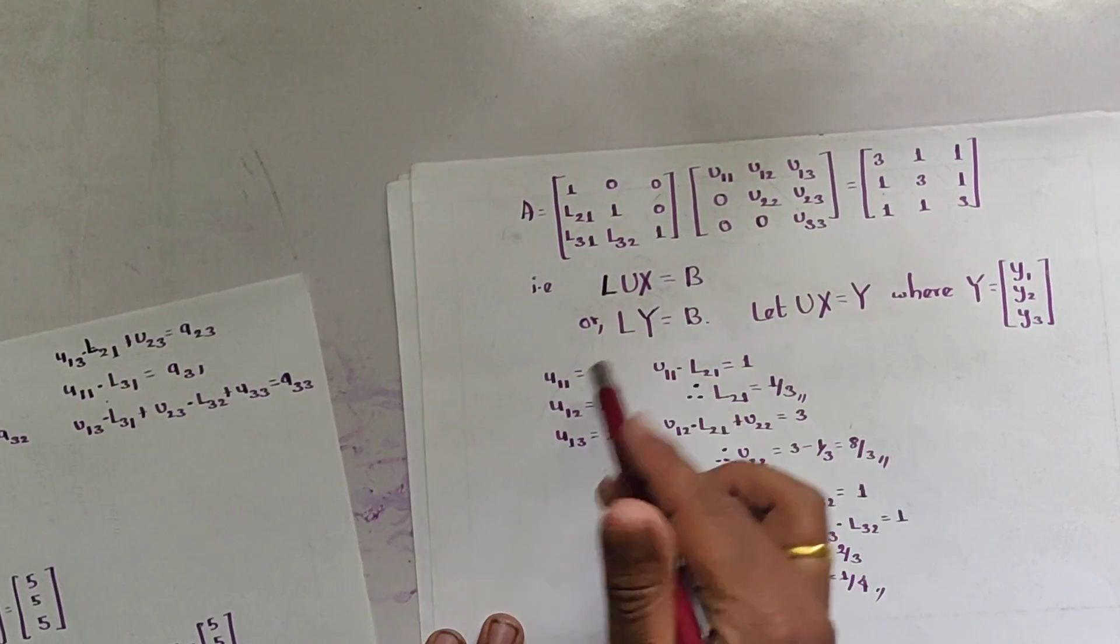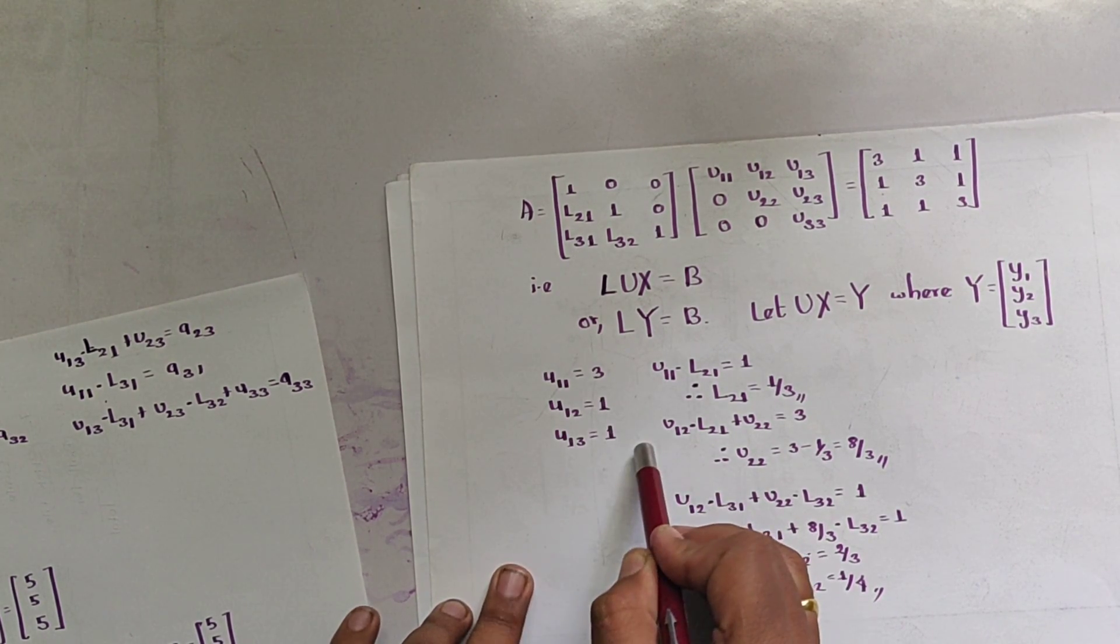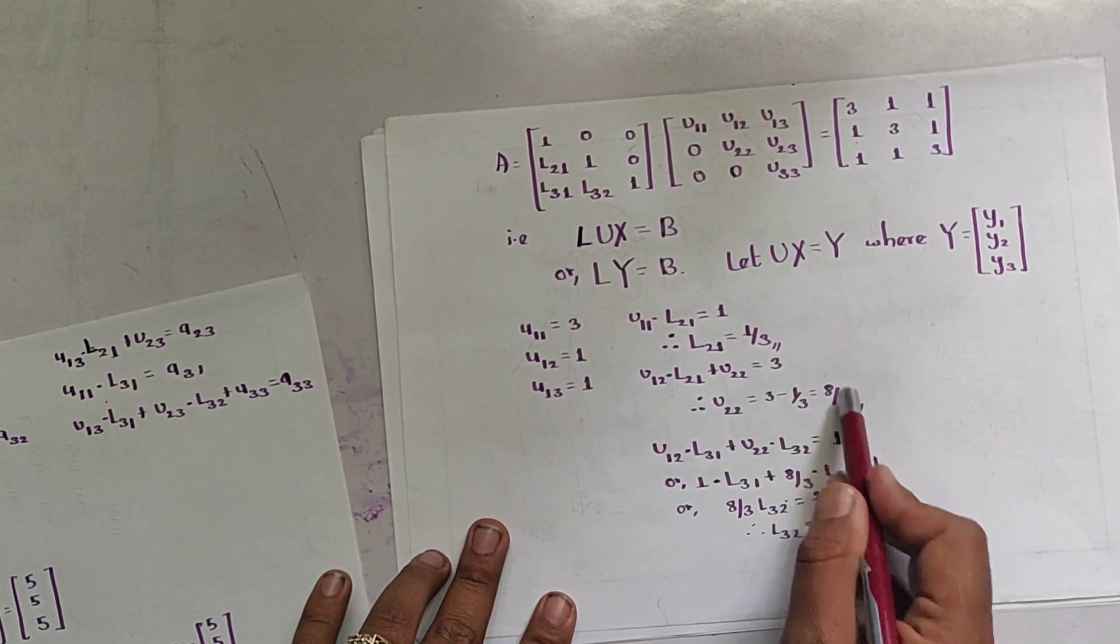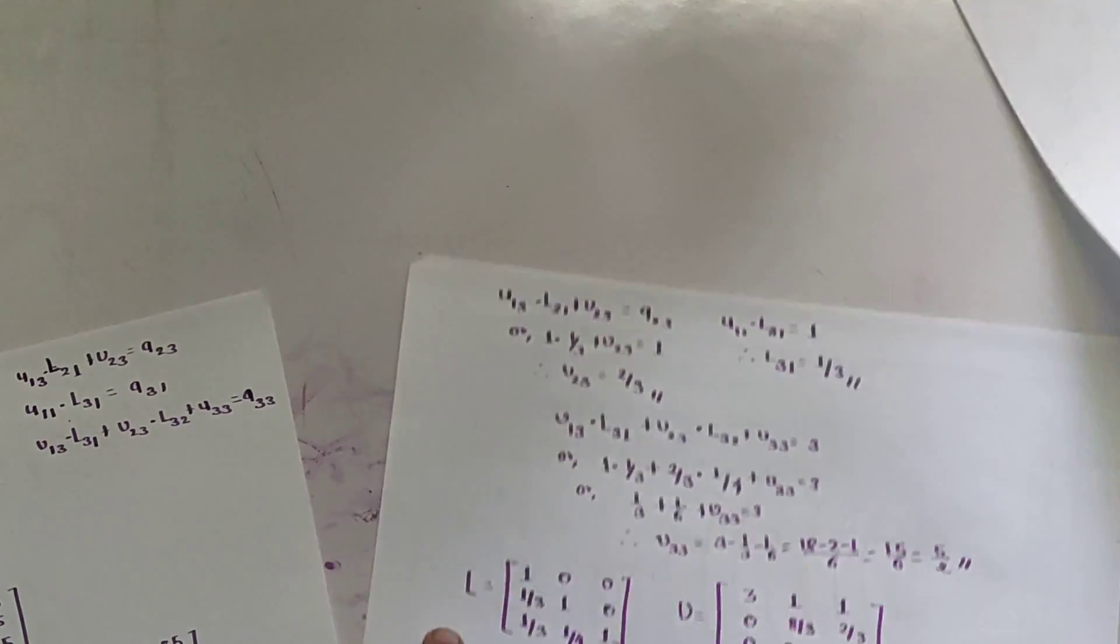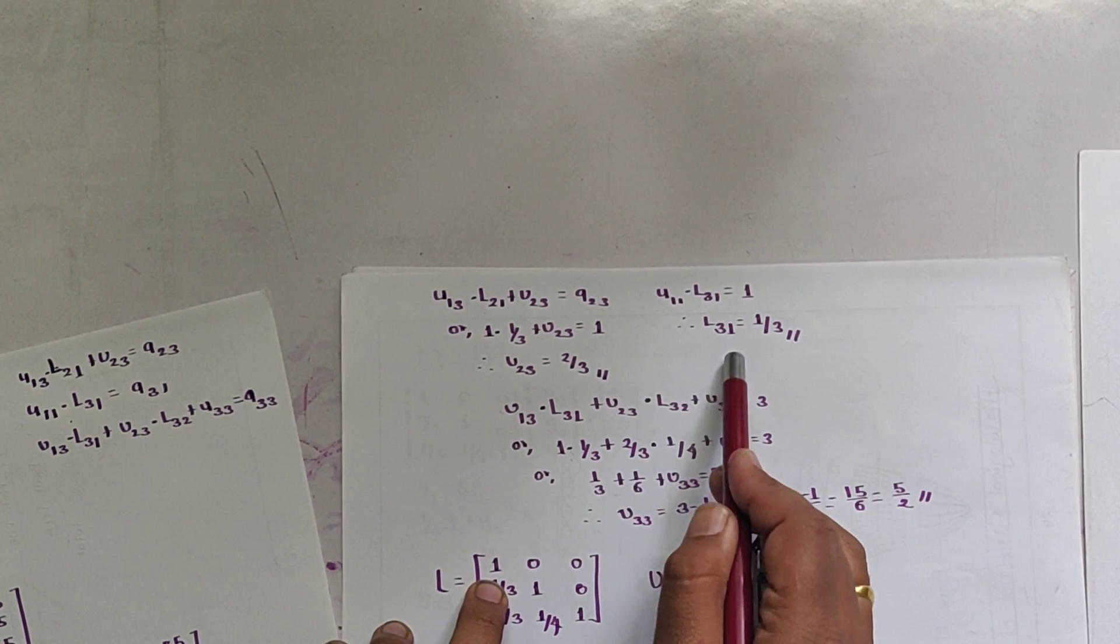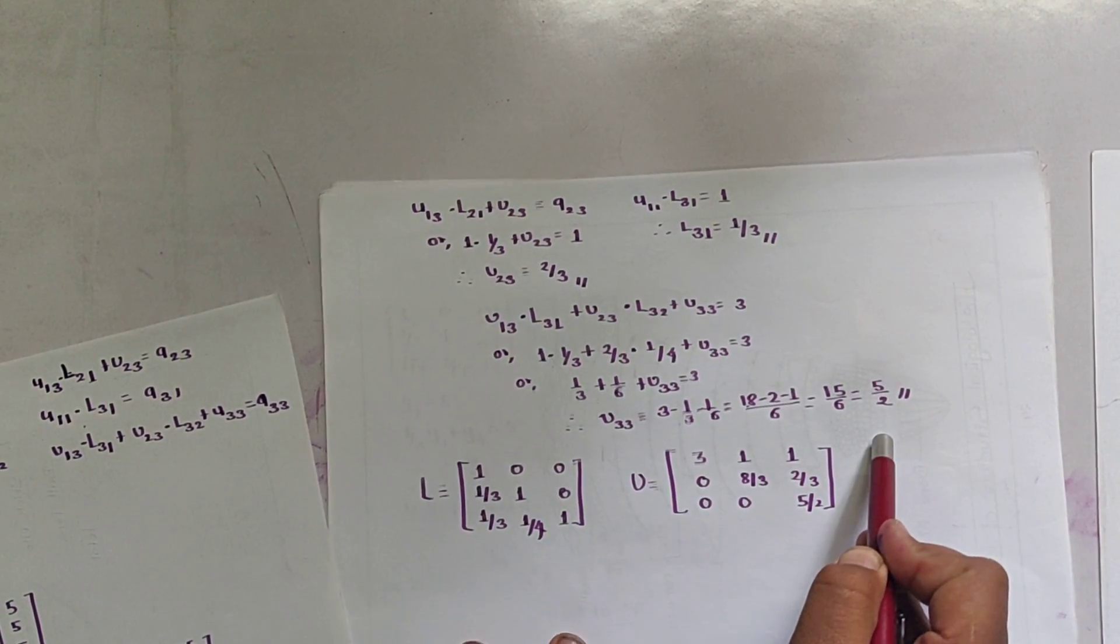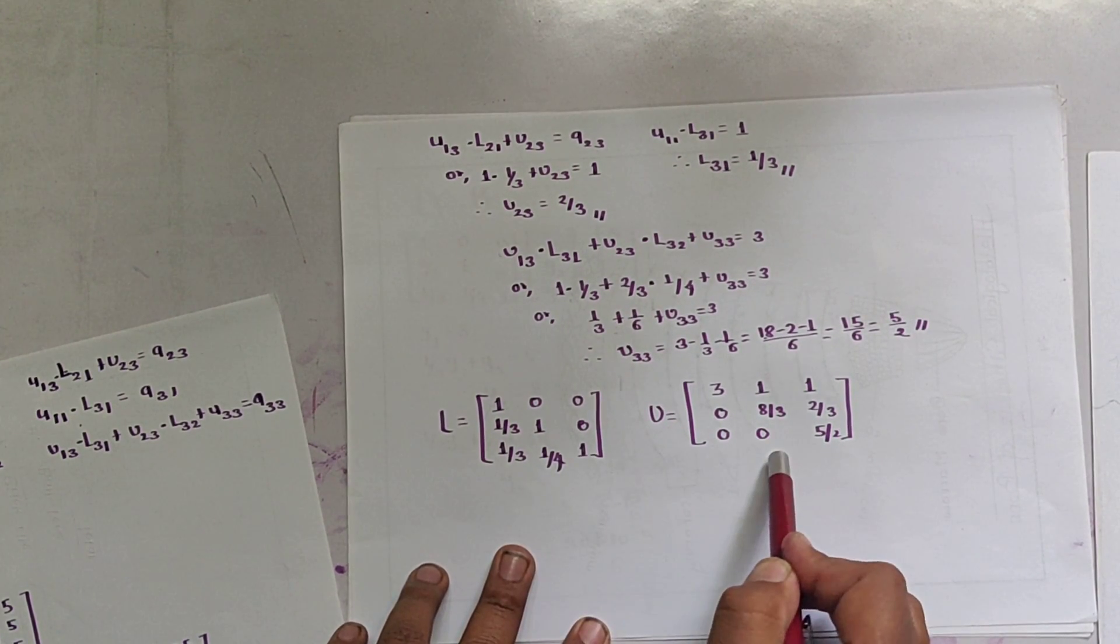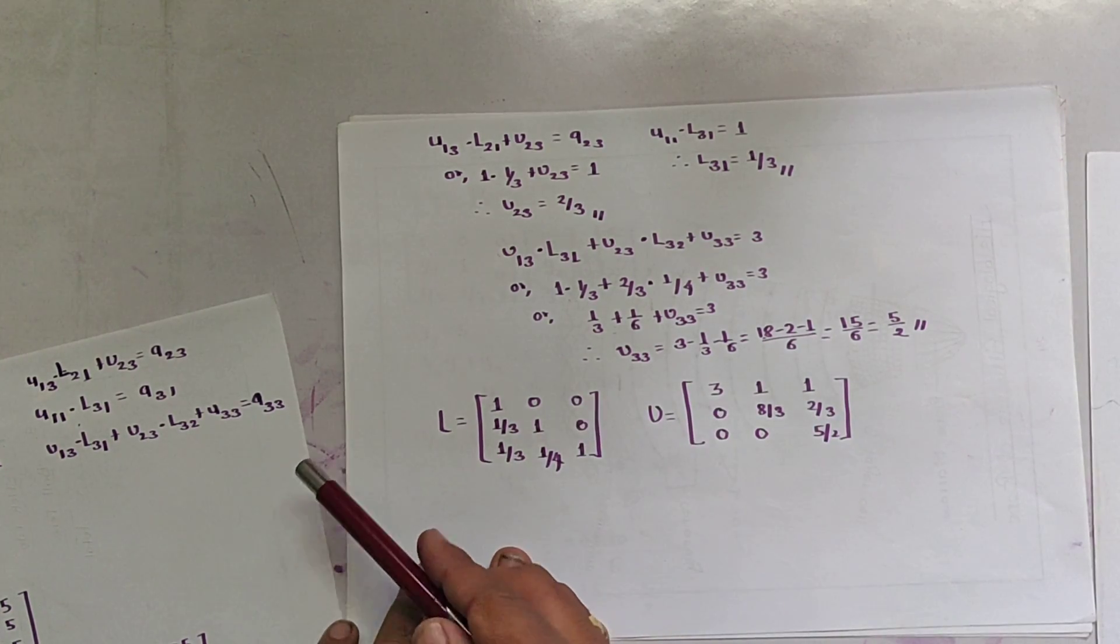By using this formula, we get U11 = 3, U12 = 1, U13 = 1. Similarly, L21 = 1/3, U22 = 8/3, L32 = 1/4, U23 = 2/3, L31 = 1/3, and U33 = 5. That means L matrix is this, we get these values by using the formula.